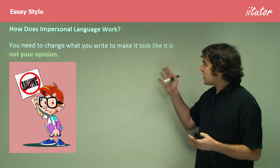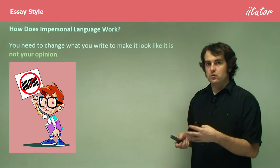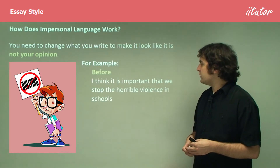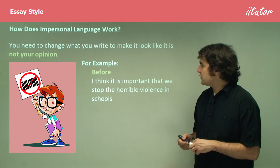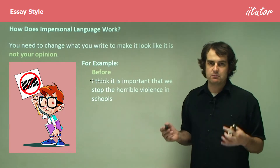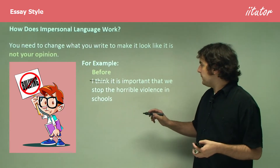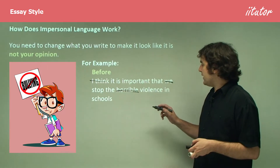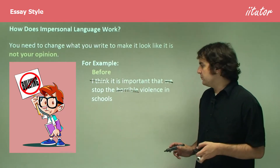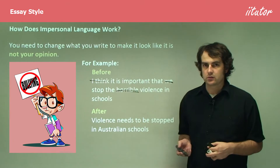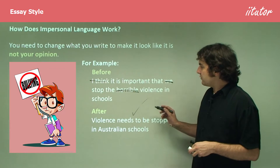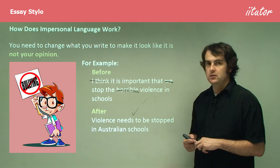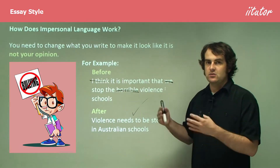Impersonal language works like this — you need to change what you write to make it look like it's not your opinion. For example: 'I think it's important that we stop the horrible violence in schools.' First, 'I think' is clearly my opinion. We also need to get rid of 'we' and remove 'horrible' because that's a feeling word. The corrected version becomes: 'Violence needs to be stopped in Australian schools.' This is a much better version — it has no personal opinion in it, just the facts. It's saying that it just needs to be stopped.